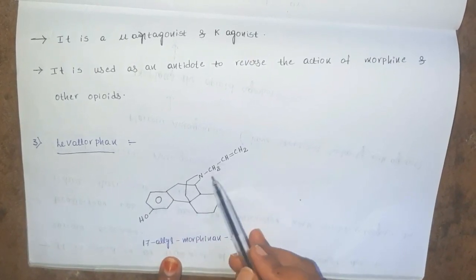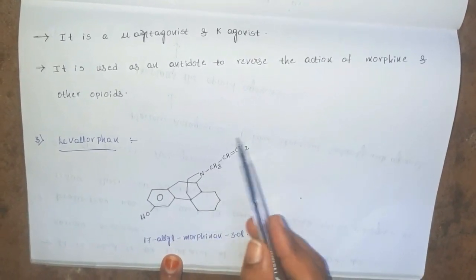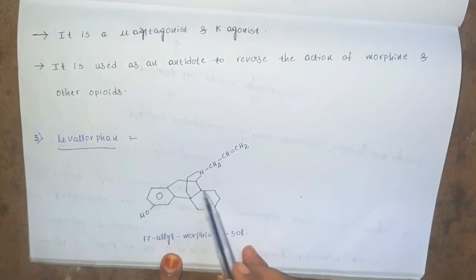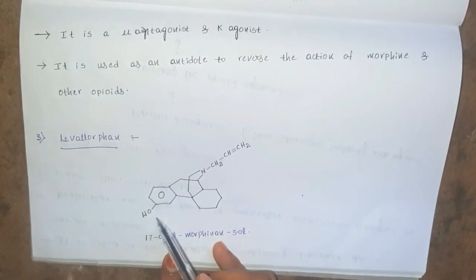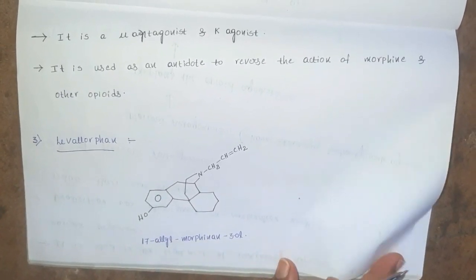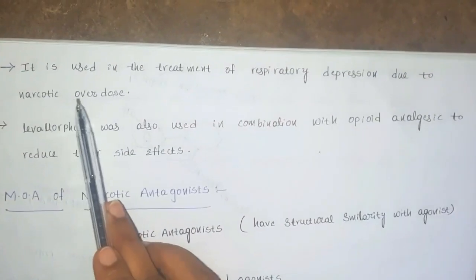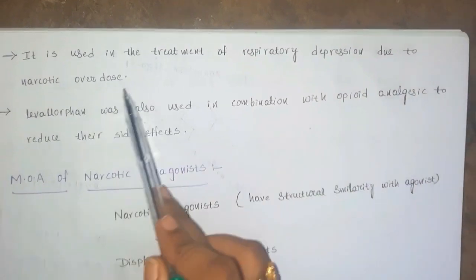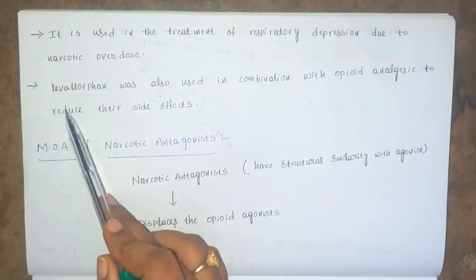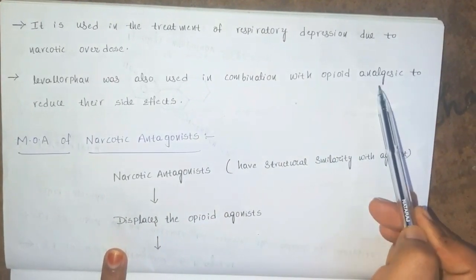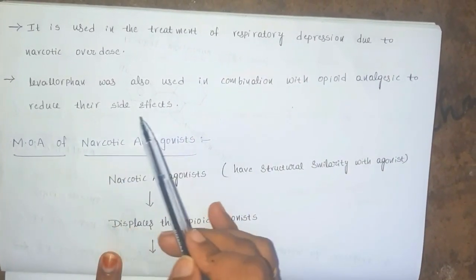The nomenclature is 17-allyl; this nucleus is called as the morphine nucleus and it contains a phenolic OH at the 3rd position, so it is called as 3-ol. Levallorphan is used in the treatment of respiratory depression due to narcotic overdose. It was also used in combination with opioid analgesics to reduce their side effects.